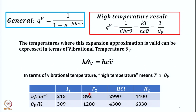For HCl, a linear molecule, the vibration is at 2990 cm⁻¹ and the corresponding vibrational temperature is 4300 K. For hydrogen, a very light molecule, the vibrational wave number is very large at 4400 cm⁻¹, and the corresponding characteristic vibrational temperature is 6330 K.